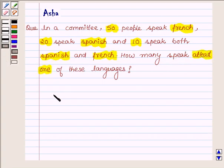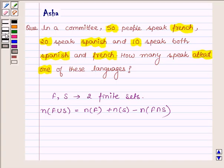First, let us learn that if F and S are any two finite sets such that they have some common elements, then the number of elements in F union S is equal to the number of elements in set F plus the number of elements in set S minus the number of elements in F intersection S.